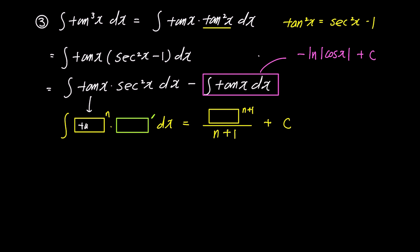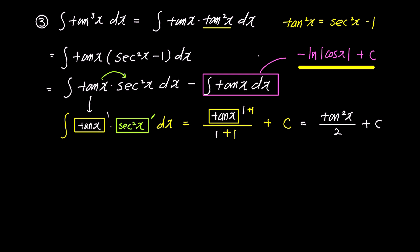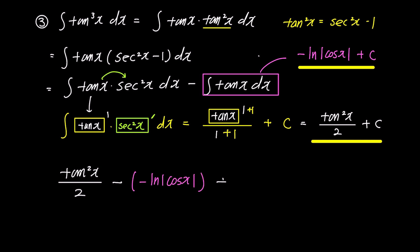Comparing with the problem, the yellow box corresponds to tan x with n = 1, and the green box prime should have sec²x, since it is the derivative of tan x. For the right side, we put tan x in the yellow box with n = 1. Therefore, the integral of tan x · sec²x dx equals tan²x over 2 plus c. Adding the two integrals: tan²x/2 minus (-ln|cos x|) gives the final result of tan²x/2 + ln|cos x| + c.